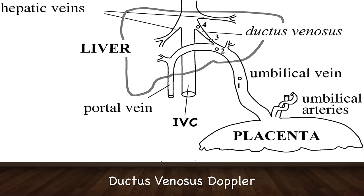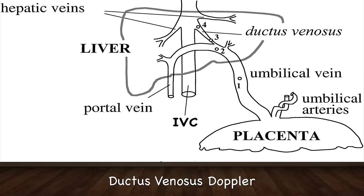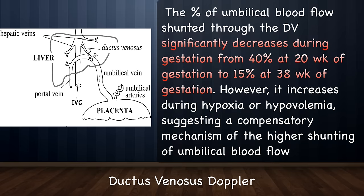I will now talk about the role of Doppler study of the ductus venosus in the diagnosis of IUGR. The ductus venosus is a narrow, trumpet-shaped vessel in the fetal liver which shunts a portion of the left umbilical vein blood flow directly to the inferior vena cava. It directly connects the umbilical vein to the inferior vena cava in proximity to the right atrium. This vessel plays a critical role in fetal circulation because it shunts highly oxygenated and nutrient-rich umbilical venous blood to the brain and myocardium instead of the fetal liver.